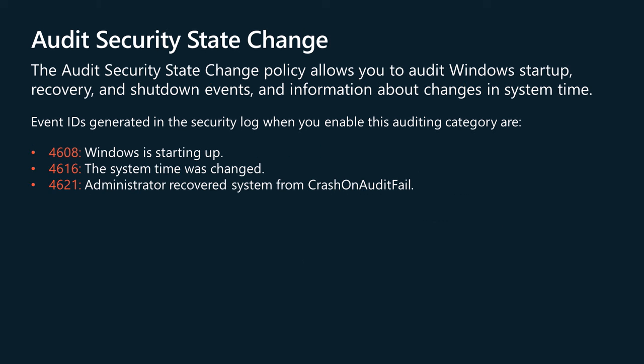The Audit Security State Change policy allows you to audit Windows startup, recovery and shutdown events, and information about changes in system time. The following events will be enabled if you configure auditing through this policy. 4608: Windows is starting up. 4616: the system time was changed. 4621: administrator recovered system from crash on audit fail.